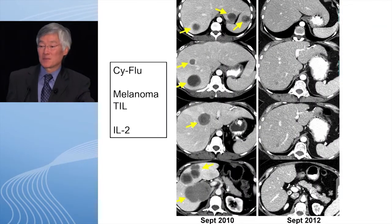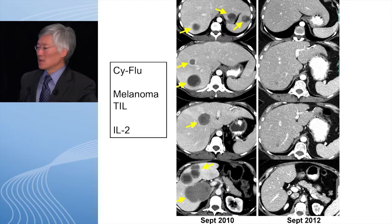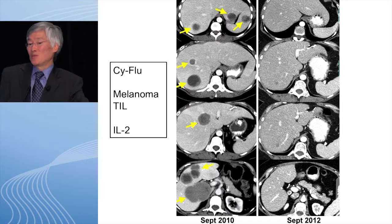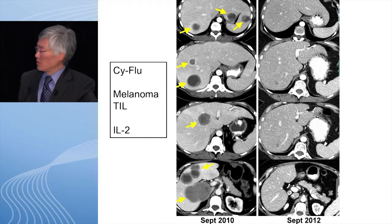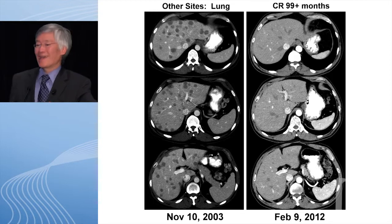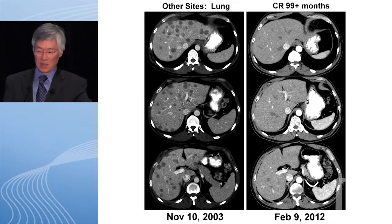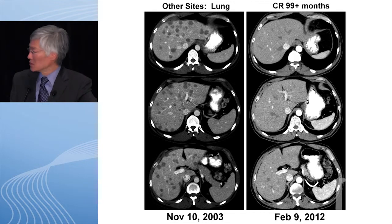We saw very dramatic responses. These are some of our more recent responses: bulky liver disease in patients rapidly progressing will rapidly regress. This is an incomplete response — to get a complete response can take up to one or two years after a single administration of T-cells. This is another patient that shows it can be very durable — a patient with 10-year follow-up, which is a little more convincing that this is a durable and complete modality for some patients.